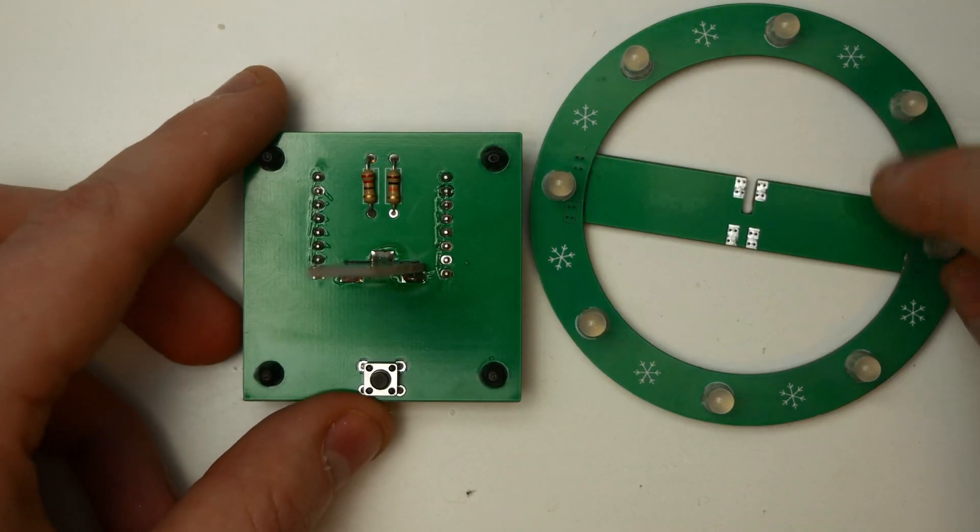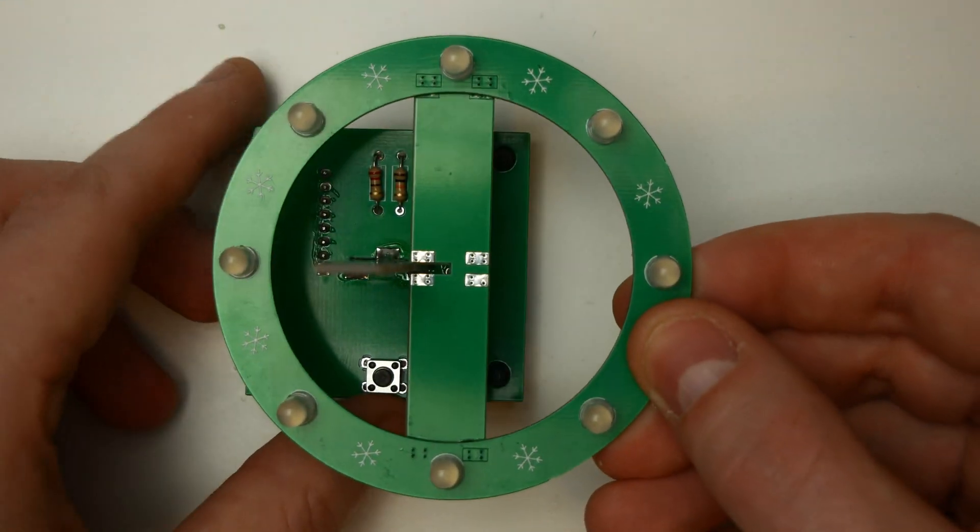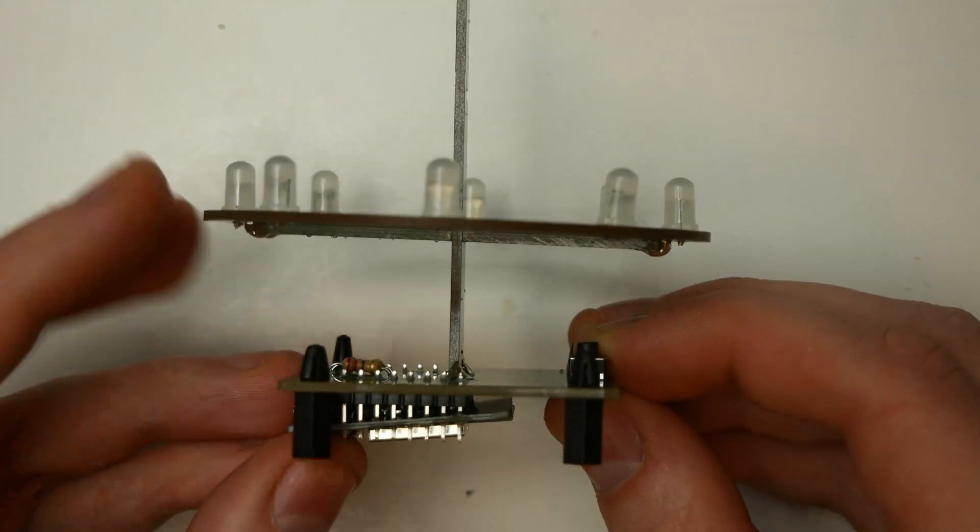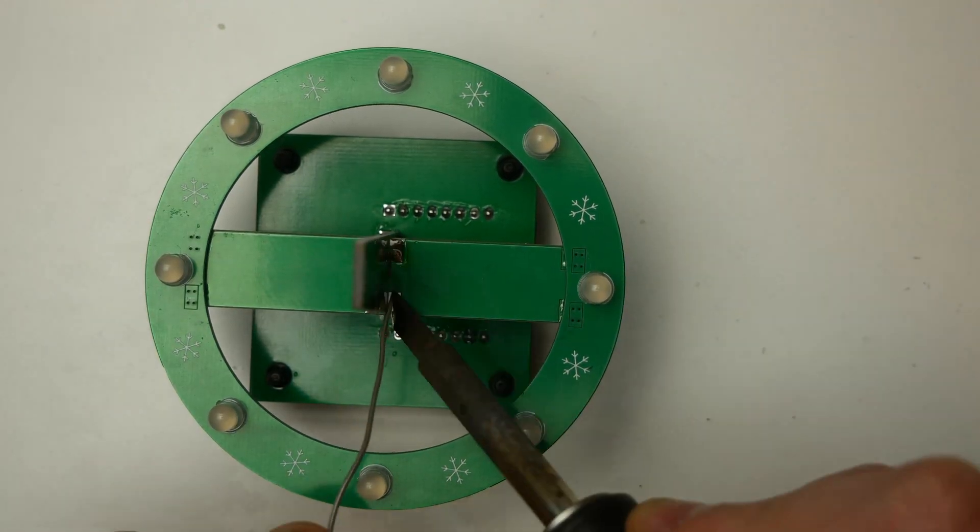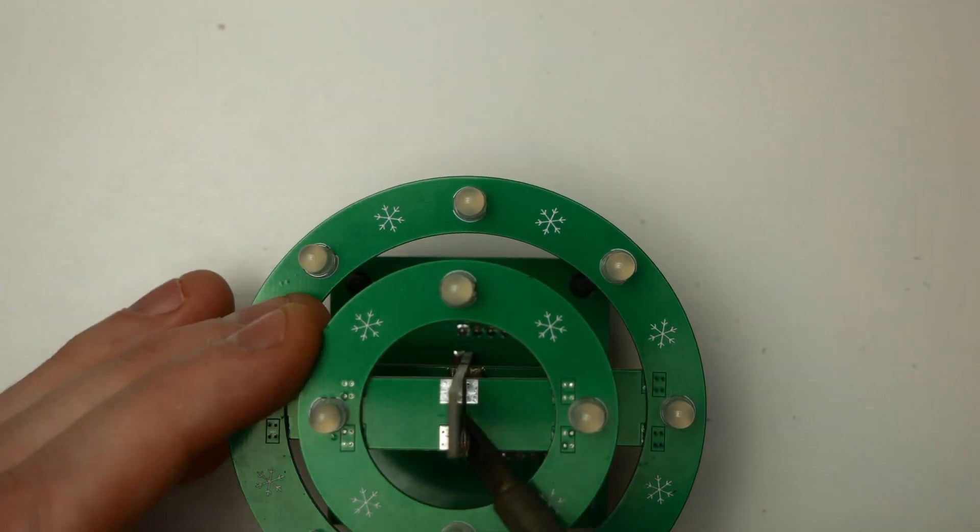After that the big ring with the LEDs facing up is put into the lower slot. Again make sure the ring is straight when soldering. The same is repeated with the small ring. This one goes into the upper slot.